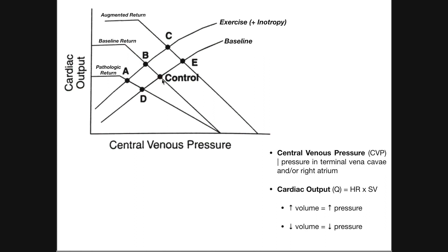The reason for the different venous return levels at points D and E comes down to blood volume. At point E, we injected saline, so there's more blood — a greater volume distributed through the same cardiovascular system, meaning more venous return to the right atrium at any given time. At point D, there's an overall lower blood volume. The same-size circulatory system distributes that blood, but at any given time there's just less venous return because there's less blood.